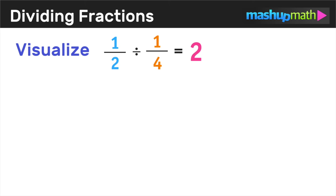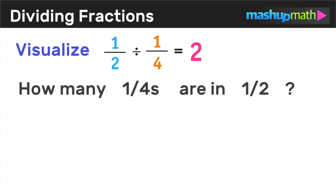So now let's quickly visualize why our answer of 2 in the last example makes sense. Why does 1 half divided by 1 fourth equal 2? And we can think of 1 half divided by 1 fourth in the form of the question, how many 1 fourths are in 1 half?